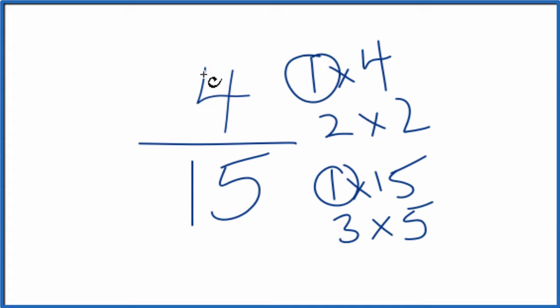What that means is we can't simplify 4/15ths any lower. This is in the simplest form. If you divide 4 by 1 and 15 by 1, you get 4/15ths. So it's already in the simplest form.